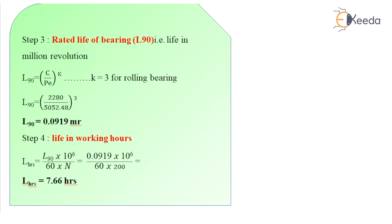Next, to find the rated life of the bearing L90, the formula is L90 equals C upon PE whole raised to power K. Since it is a rolling bearing, K equals 3. Substituting the values of C and PE, we get L90 equal to 0.0919 million revolutions. To find the life in working hours, the formula is LR equals L90 multiplied by 10 raised to power 6, divided by 60 into N. Putting L90 as 0.0919 and N as 200 rpm, we get LR equal to 7.66 hours.